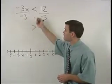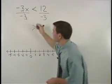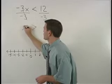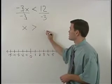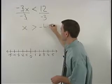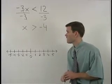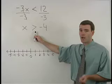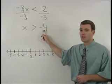On the left side, the negative 3s cancel and we're left with x. And on the right side, 12 divided by negative 3 is negative 4. So we have x is greater than negative 4.